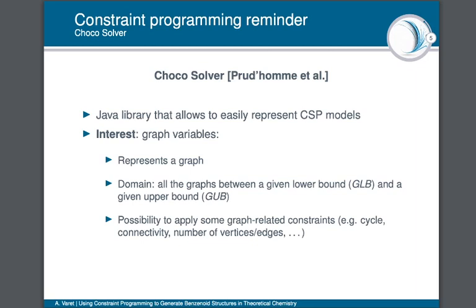Our implementations use the library ChocoSolver, a Java library that allows us to represent CSP models. The main interest of this library is that it offers a specific kind of variable called the graph variable. These variables represent graphs and their domains are defined by the set of all subgraphs between a given lower and upper bound. Choco also offers some graph-related constraints like a cycle, connected, or constraints about the number of vertices or edges.